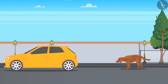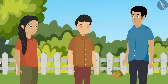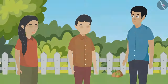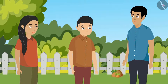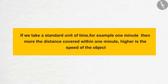Earlier it was near that wall and now it is beside the car. When an object's or organism's position changes with time, then it means that it is in motion. But Puneet brother, how would we measure it? If we take a standard unit of time, for example one minute, then the more the distance covered within one minute, the higher is the speed of the object.